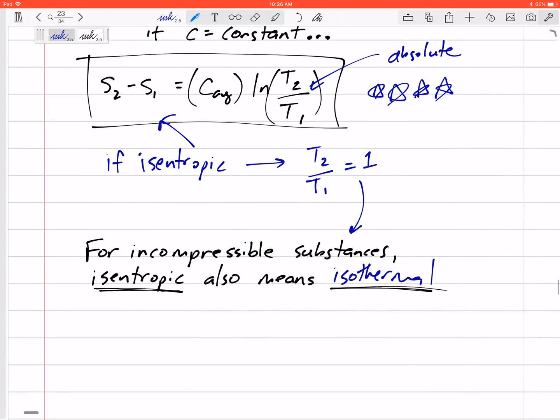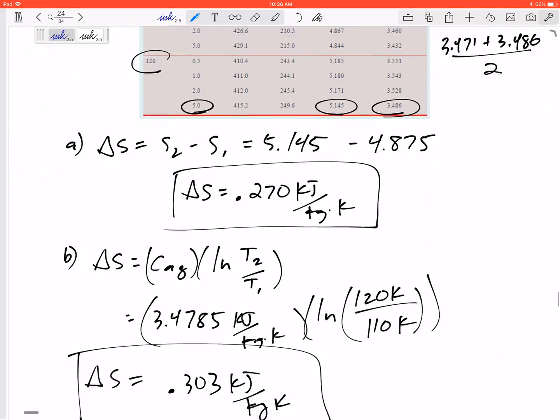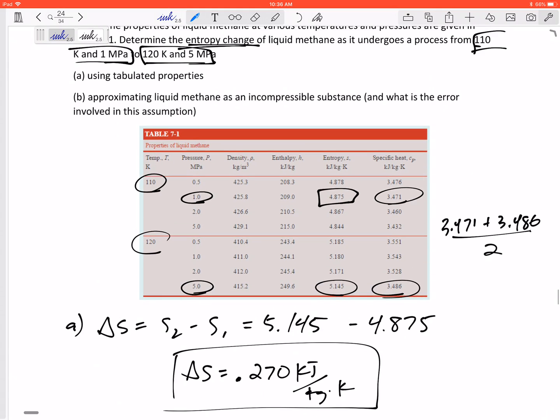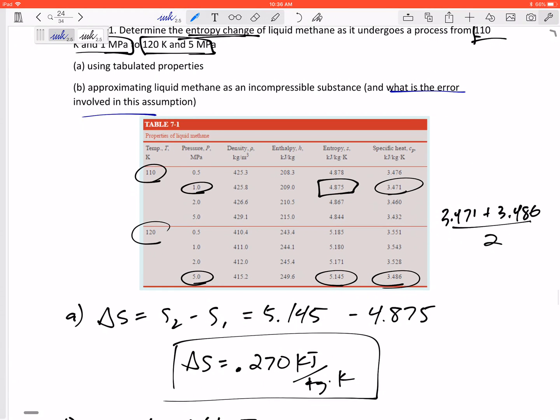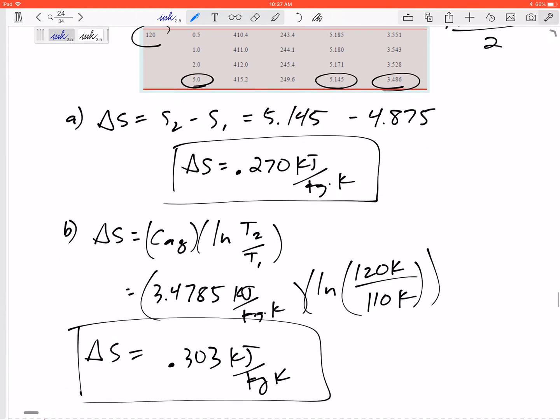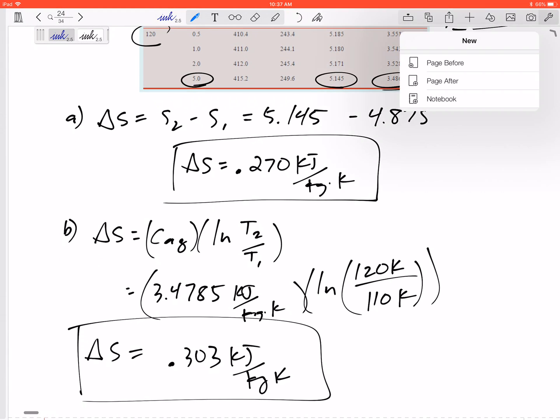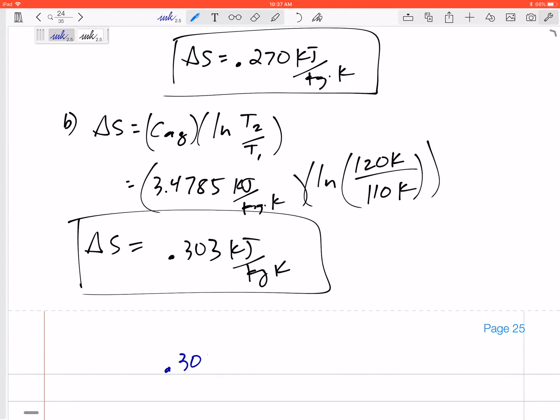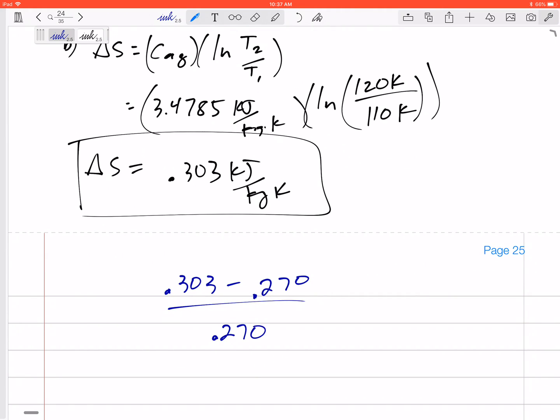You would get different answers if you had those in Celsius. Alright, so there is the delta S. And what is the error in this assumption? Well, what is the difference? Let's see, 0.303 minus 0.270 divided by the original, divided by the most accurate which is 0.270. 0.122. So the error, 12.2%.